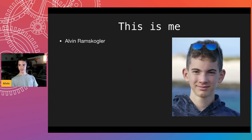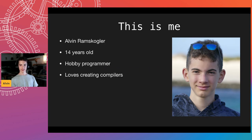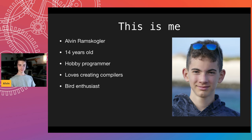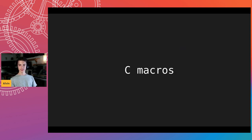This is me. I'm Alvin Ramskoker. I'm 14 years old right now — I actually have a birthday in about two and a half weeks. I love programming as a hobby, and I also love creating compilers and fiddling around with custom programming languages. That's really fun. And I love birds.